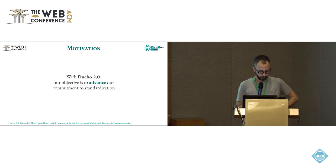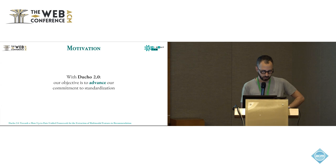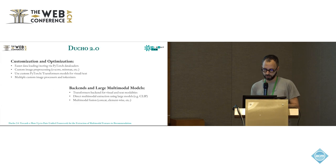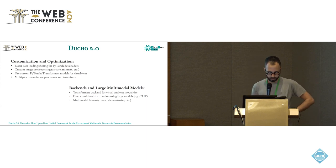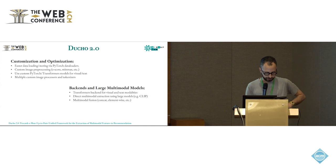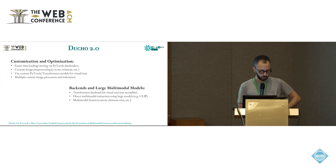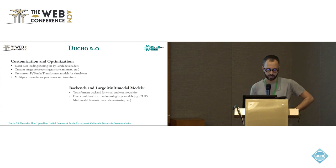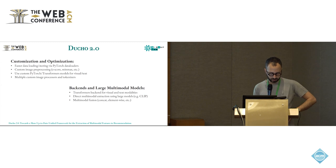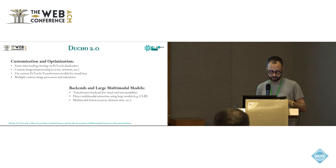With Duccio 2.0, we introduce several enhancements focusing on customization and standardization. These improvements include faster data loading and storing through PyTorch data loaders for efficient data handling. We also introduce custom image preprocessing techniques such as data score normalization, allowing users to tailor preprocessing for their specific needs. Duccio 2.0 supports the use of custom models and tokenizers, providing flexibility in choosing the best tools for feature extraction. It also allows direct multimodal extraction using large models like CLIP, enhancing the ability to process and fuse multimodal data effectively.